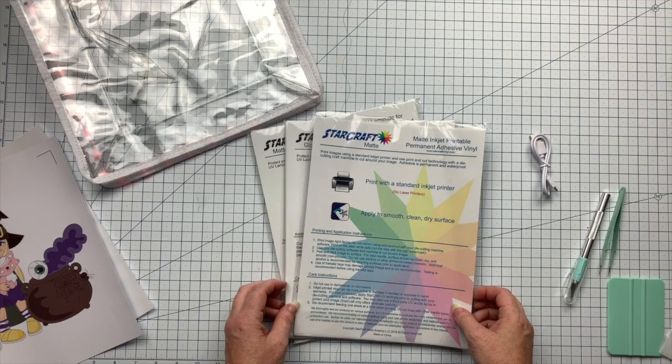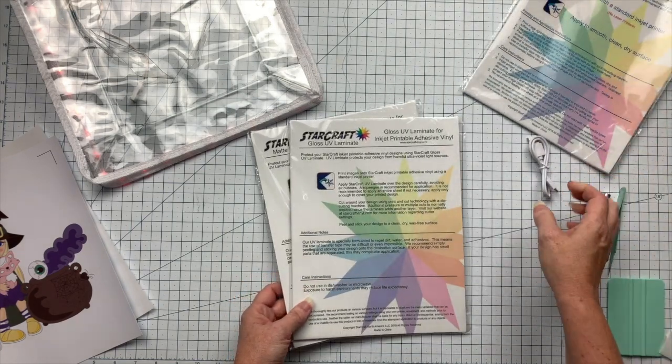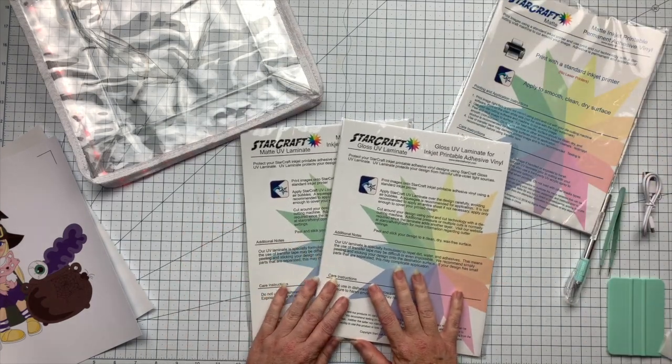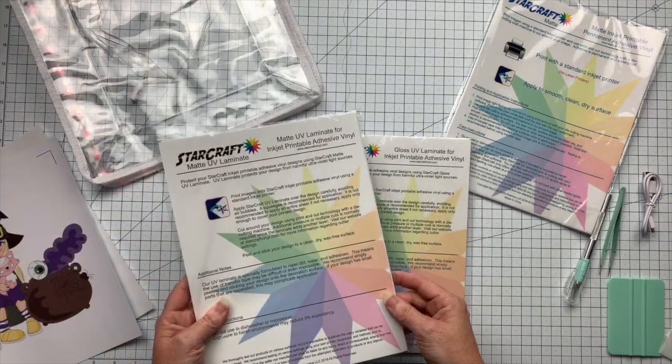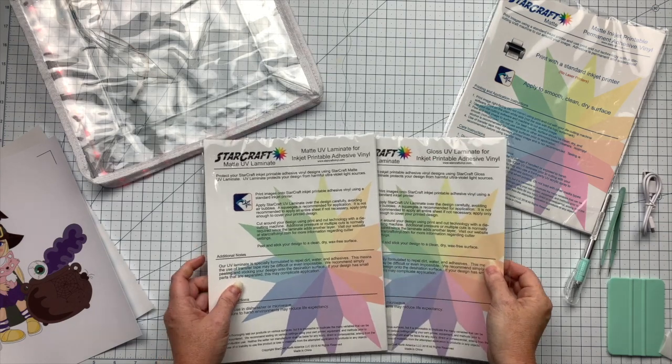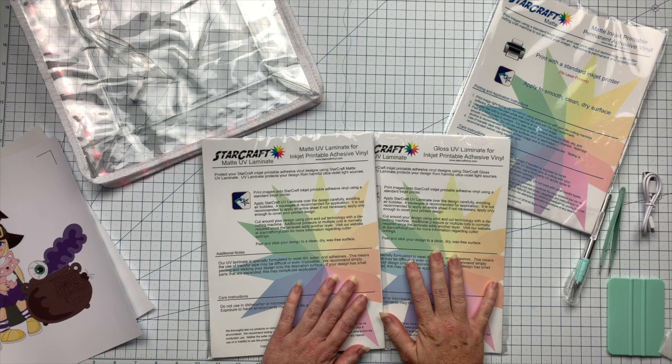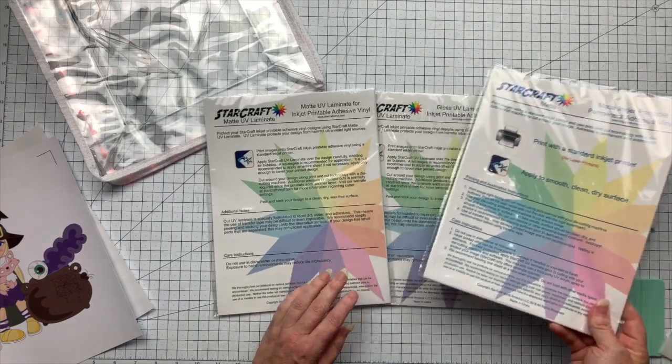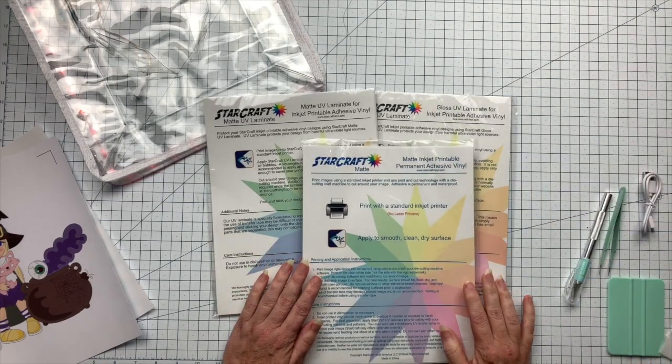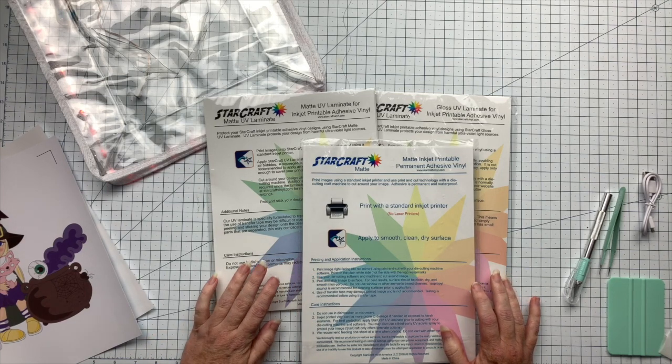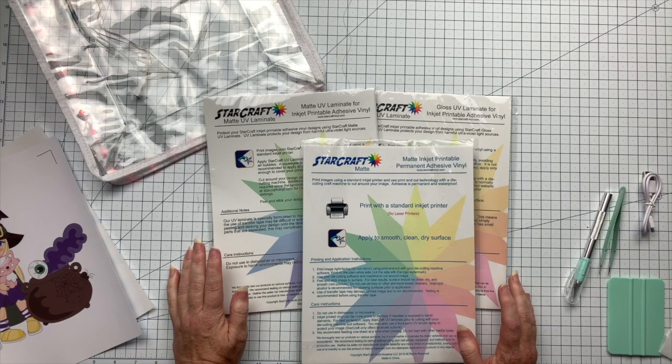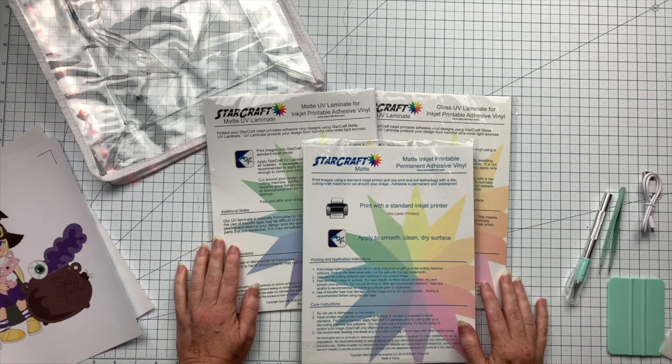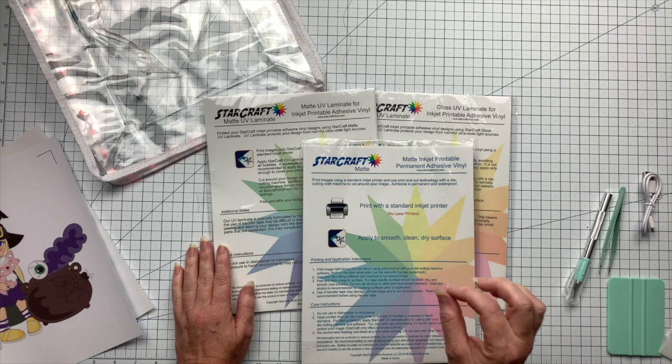They also have these laminates that go on top. These are optional but they protect your design more. They have a gloss UV laminate and a matte UV laminate. These are purchased separately, you can get one or the other. One thing to keep in mind with these is none of them are meant to be used with transfer tape. Whatever you're cutting is going to have to be transferred like a sticker, not like a vinyl decal. You don't want to print out a bunch of different letters or a design that's a bunch of different pieces because you're going to have to move each one individually.